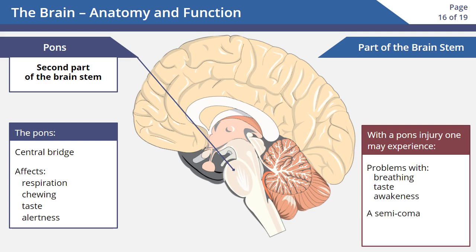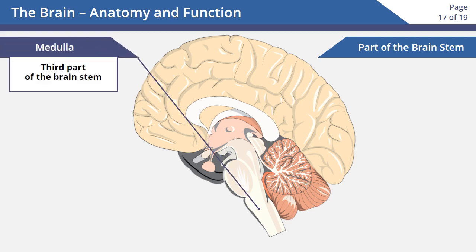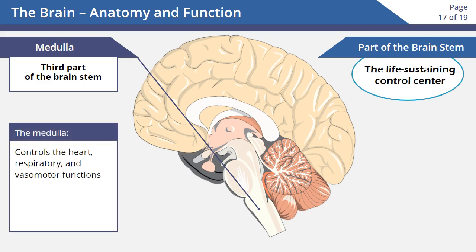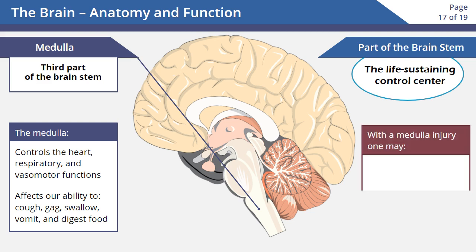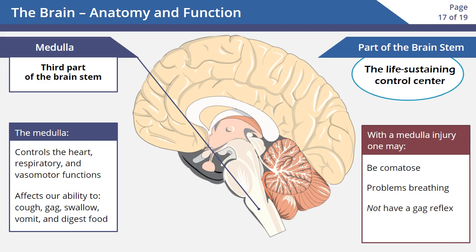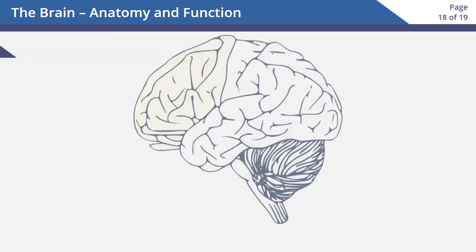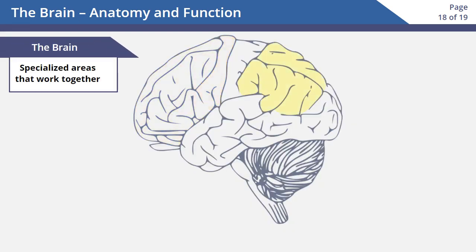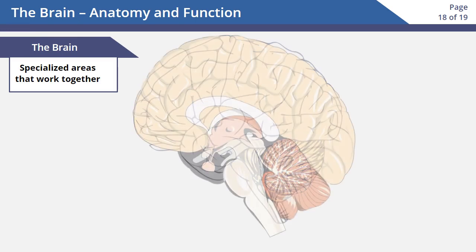The medulla is the third part of the brain stem and is the life-sustaining control center. It controls the heart, respiratory, and vasomotor functions. It also affects our ability to cough, gag, swallow, vomit, and digest food. Someone with problems in this area may be comatose or have problems breathing. They may also not have a gag reflex or be able to cough. The brain is made up of several specialized areas that work together, helping control everything we need for survival.